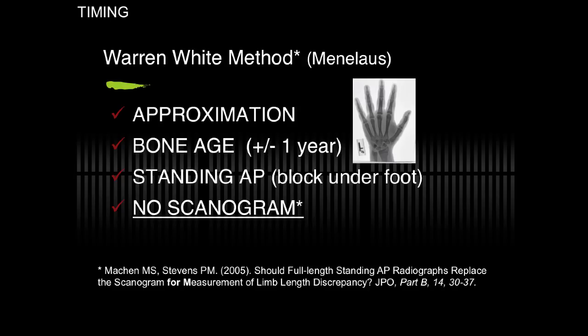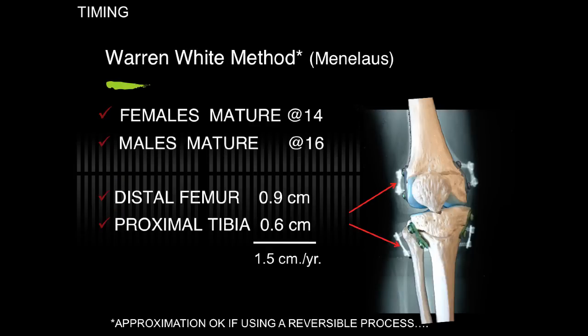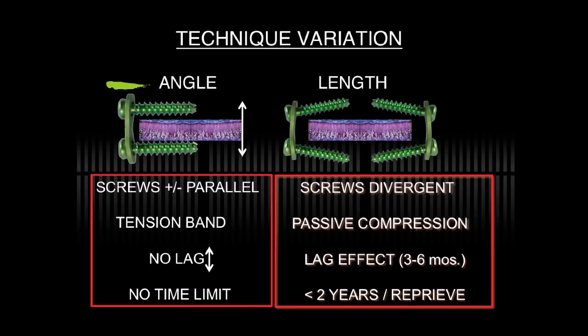A previously popular method that is still useful when you use reversible technology is the Warren White method, popularized by Menelaus. This is based on the estimation that in the average adolescent population the distal femur will grow 0.9 cm per year and the proximal tibia 0.6 cm, for a total of 1.5 cm per year. Females mature sooner at about age 14 and males at age 16. With changes in the population, nutrition, and intercultural exchange, these are just very rough guidelines, but they are useful when using reversible technology.